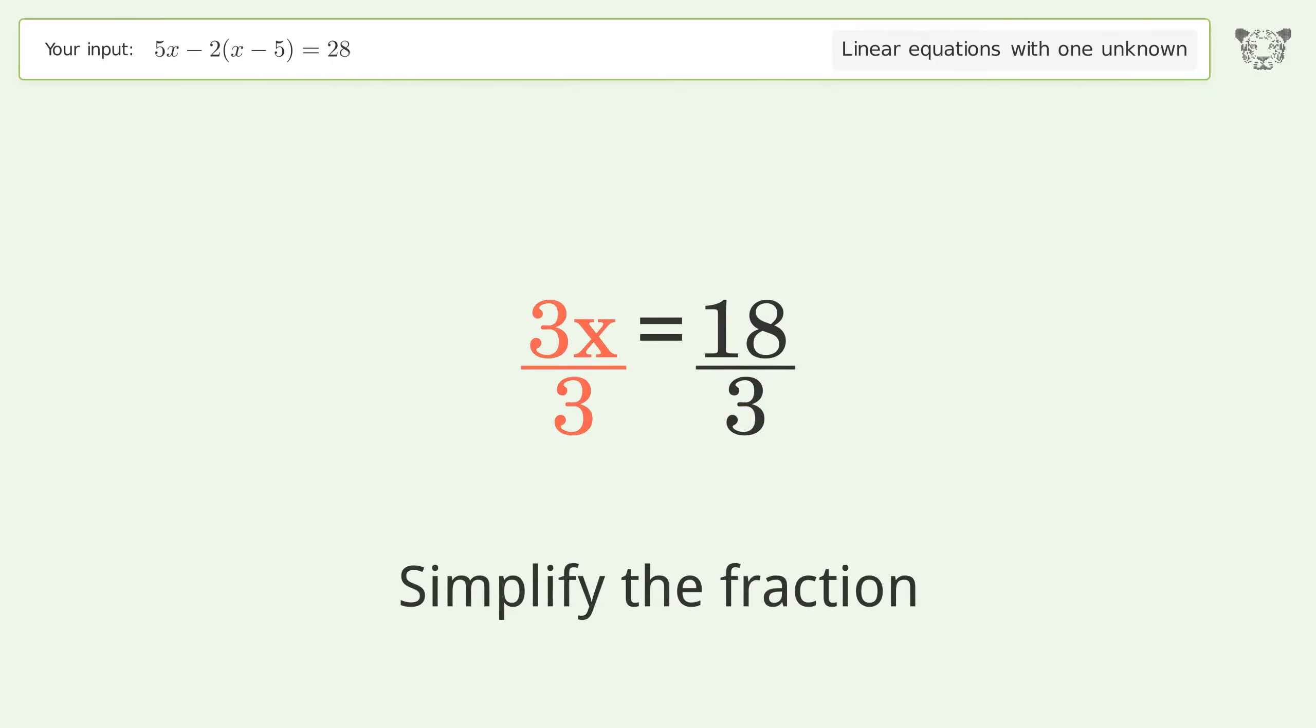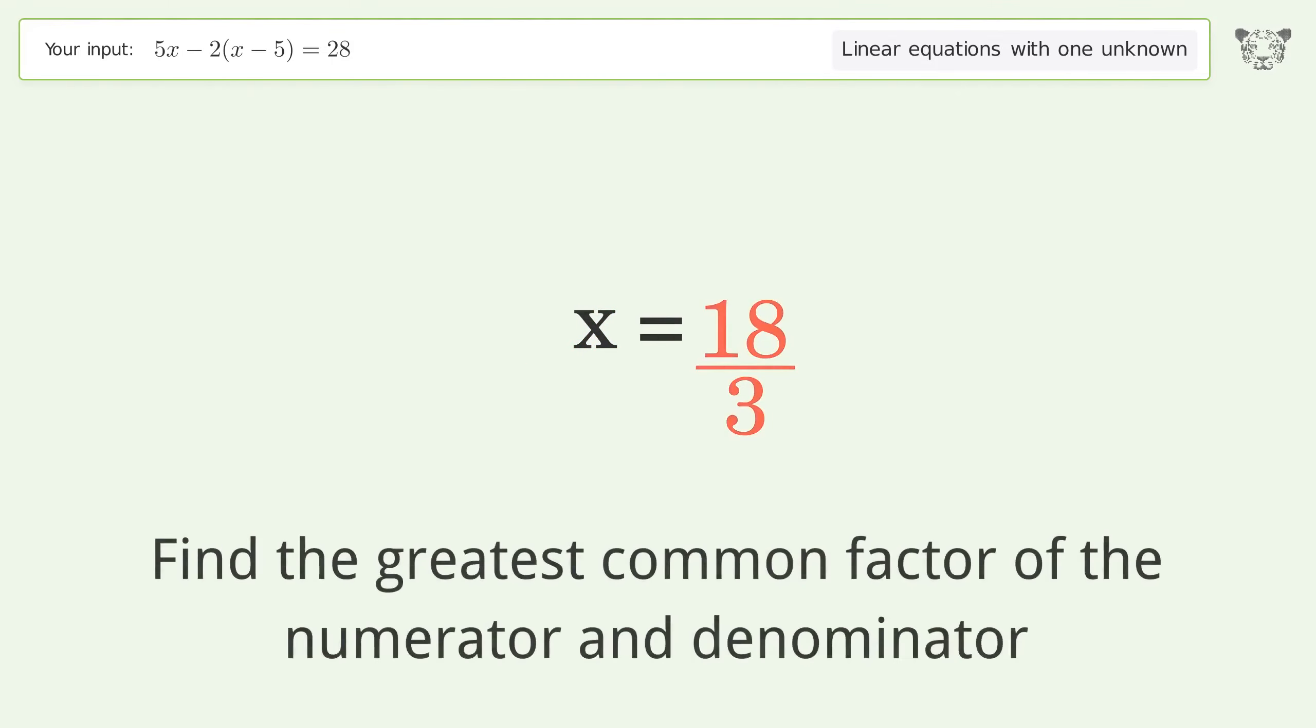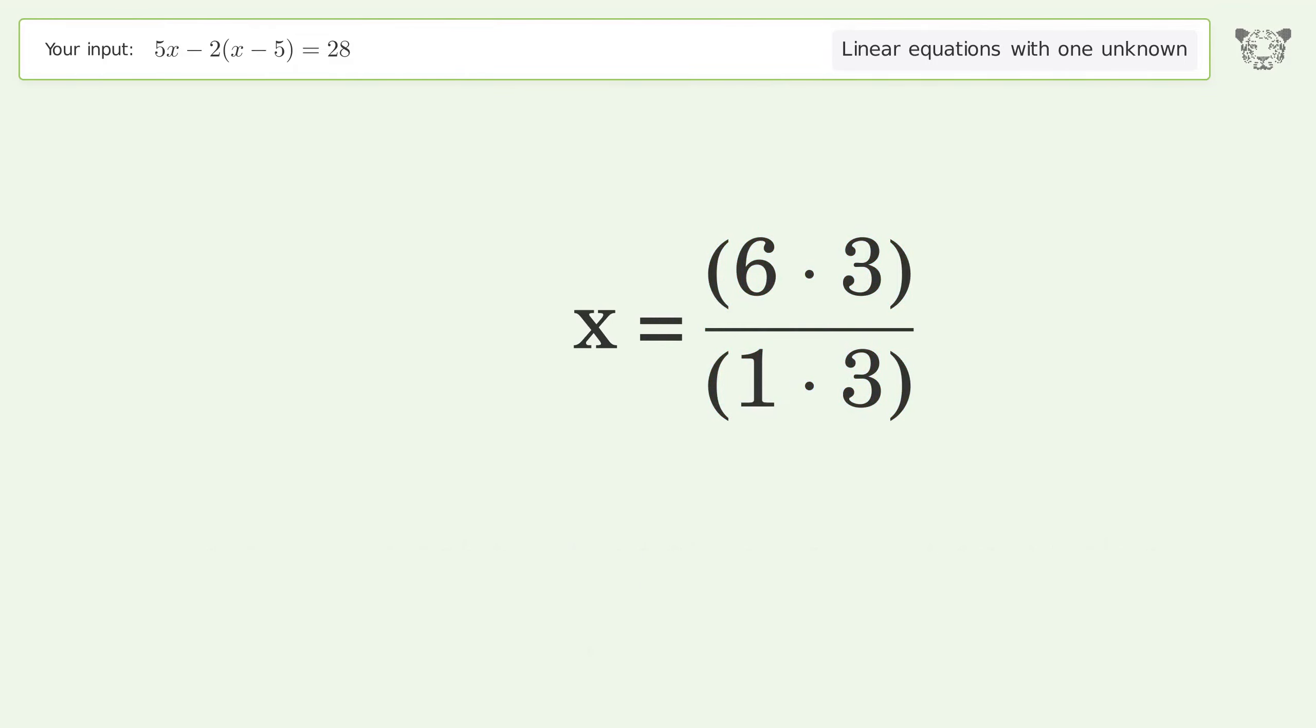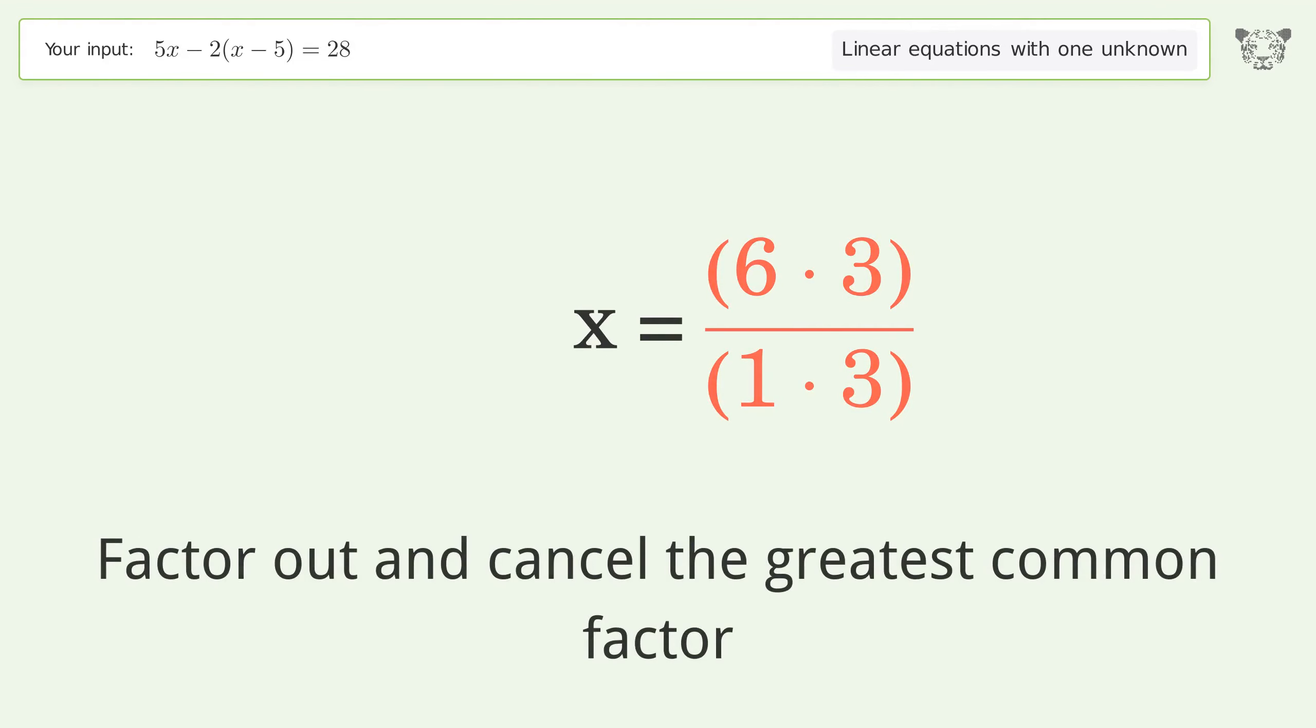Simplify the fraction. Find the greatest common factor of the numerator and denominator, then factor out and cancel the greatest common factor.